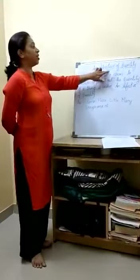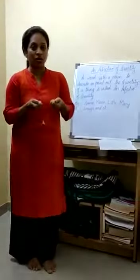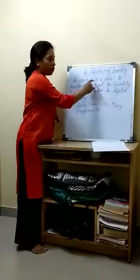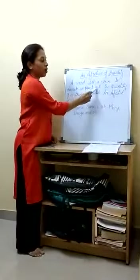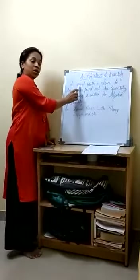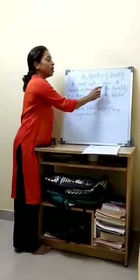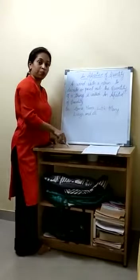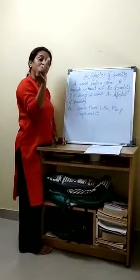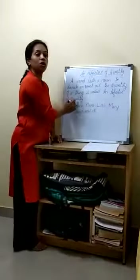Today we will learn about an adjective of quantity. Quantity is different from quality. Quantity means the weight or the things which we can weigh. A word with a noun to describe or point out the quantity of a thing is called an adjective of quantity. A word with a noun — and noun is a name of a person, place or a thing. To describe means to tell about more, to tell about that person or the place or the thing more, or to point out — to tell exactly what it is. Point out the quantity of a thing — that is called an adjective of quantity.